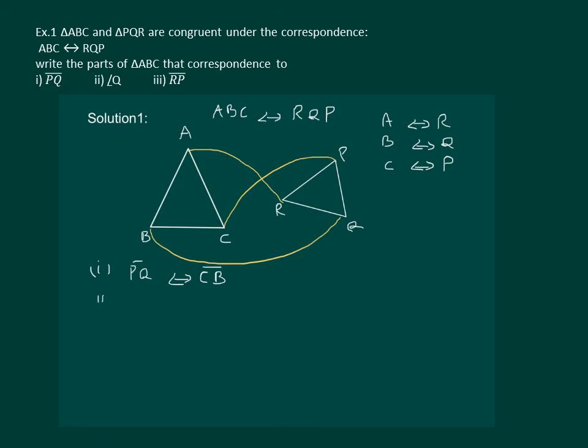Second part is angle Q, that will correspond to angle B. And the third part is to find side corresponding to line segment RP, and that would be line segment AC.